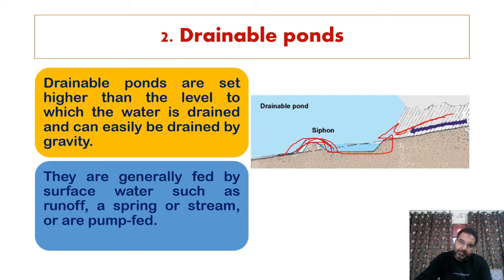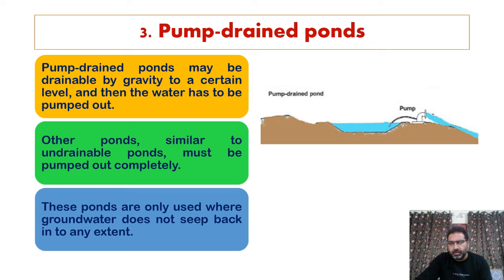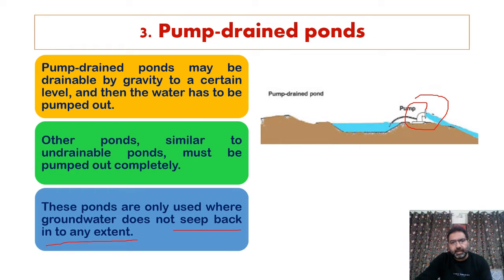Drainable ponds are generally fed by surface runoff, spring, stream, or by pumping. The third subcategory is pump-drained ponds. These may be drainable by gravity to a certain level, but then water must be pumped out — at some point, to completely drain the water, pumps are needed. These ponds are only used where groundwater does not seep back in to any significant extent.